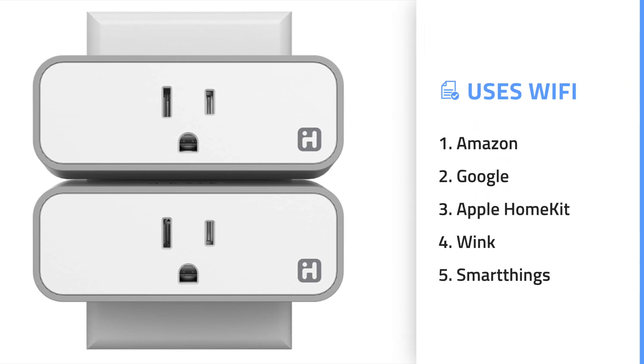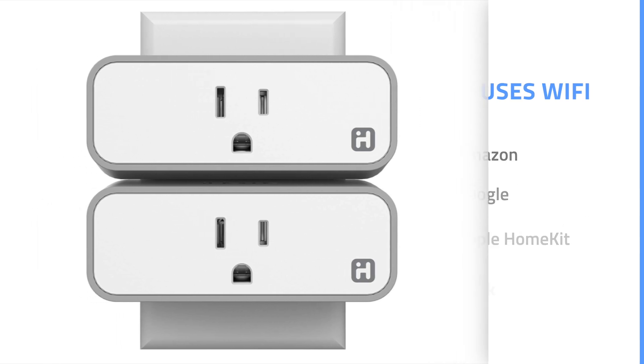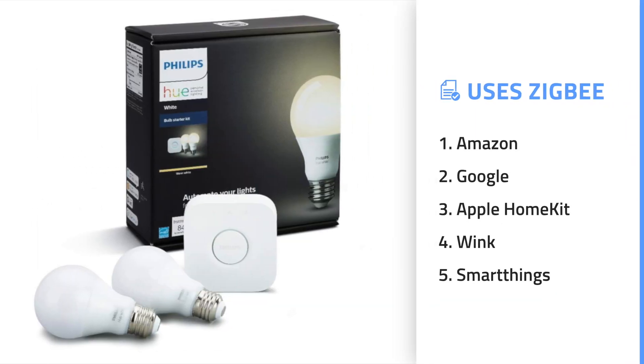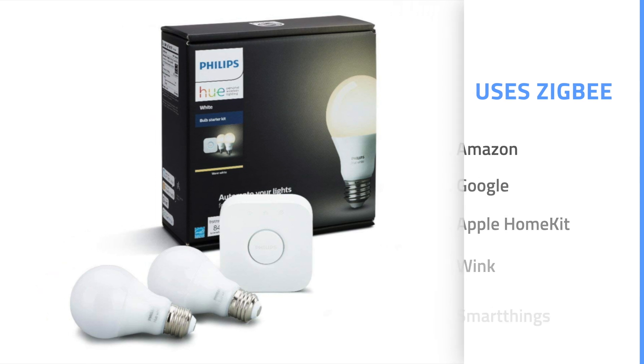Manufacturers can build devices that support one of those technologies and tap into one or more of the broader platforms. For instance, the iHome Smart Outlet uses WiFi and supports Amazon, Google, Apple HomeKit, Wink, and SmartThings. Philips Hue uses Zigbee, but with their own hub can be integrated with Amazon, Google, and Apple HomeKit. It's these platforms that open up the possibilities for a smart home, allowing different manufacturers' devices to talk to one another.